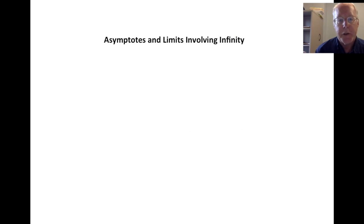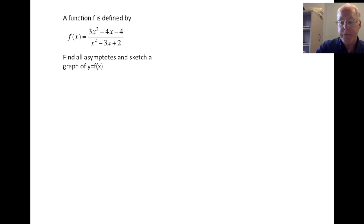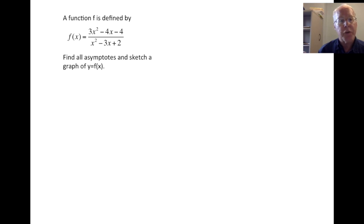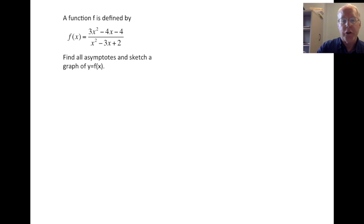Hi. In this video we're going to take a look at techniques for finding asymptotes of rational functions. Our problem is the following. A function f is defined by f of x equals 3x squared minus 4x minus 4 over x squared minus 3x plus 2. Find all asymptotes and use this to sketch a graph of y equals f of x.